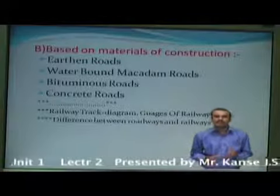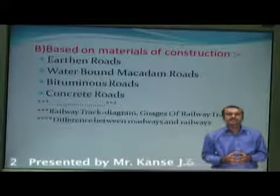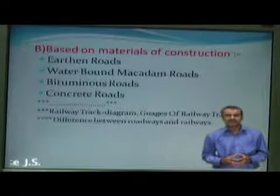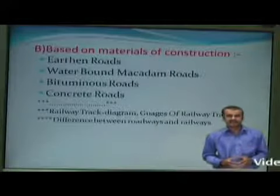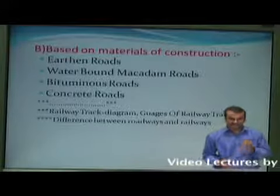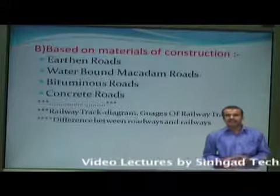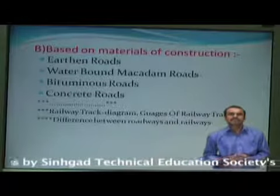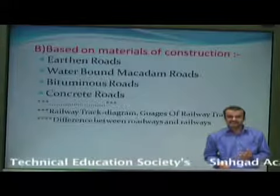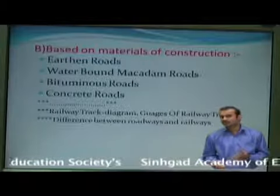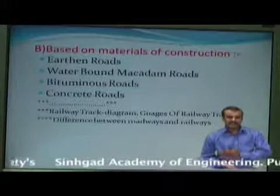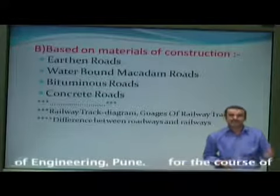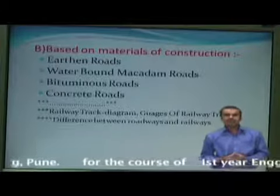The second category is water bound macadam roads. These roads are constructed using broken pieces of stones of sizes 2.5 cm to 7.5 cm. The bigger pieces are laid in the bottom layer and smaller sizes are laid uniformly on top, then compacted using bulldozers. The binding agent is a mixture of stone dust and water, or soil and water, which is laid over the two bottom layers of broken stone and compacted again to form the water bound macadam road.